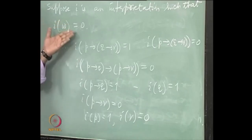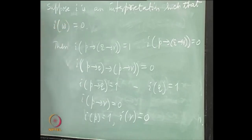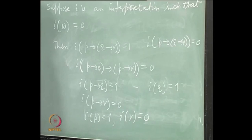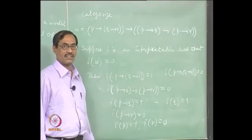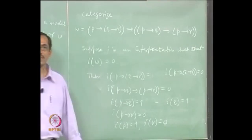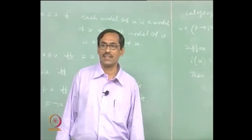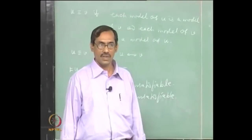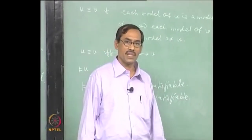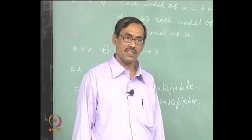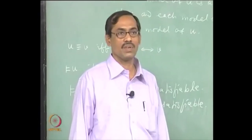It says this is not possible — i of w can never be 0, whatever interpretation i may be. Therefore w is valid, because there is no interpretation i which falsifies w. Therefore every interpretation satisfies it, and therefore w is valid.